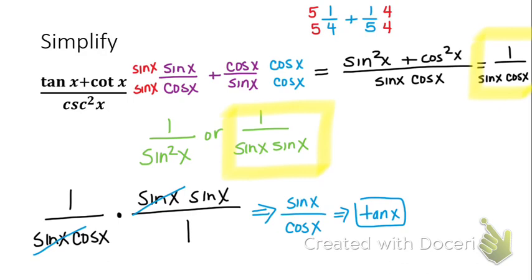Simplifying might be a little bit harder than verifying, because when you verify you already know the end game — you're just trying to get the left side to match the right side. When you simplify, we don't really know what we're trying to get to; we just keep working until we run out of stuff to do.